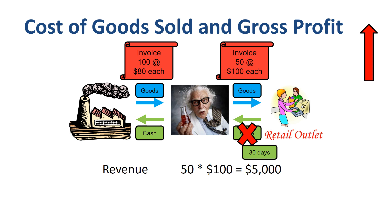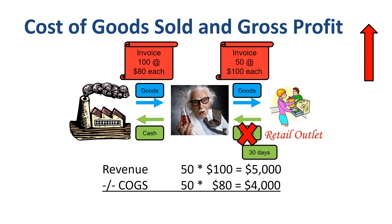You deliver and sell 50 units at $100 each, so your revenue is $5000. The cost to you of sourcing those 50 units that you have now sold is 50 units at $80 each, so your cost of goods sold is $4000. You sell 50 units at $20 margin per unit, generating a profit of $1000. The 50 units that haven't been sold yet stay in inventory at a value of $4000.